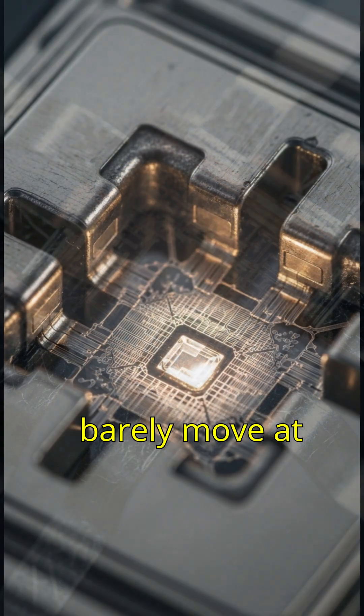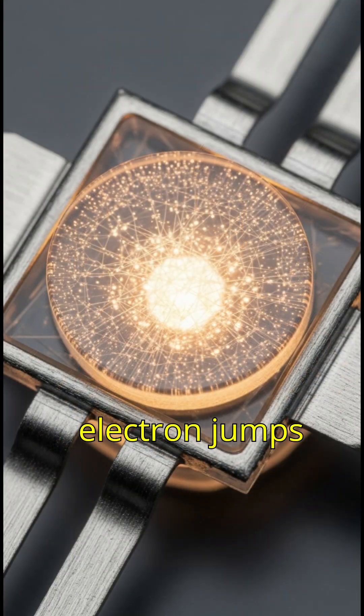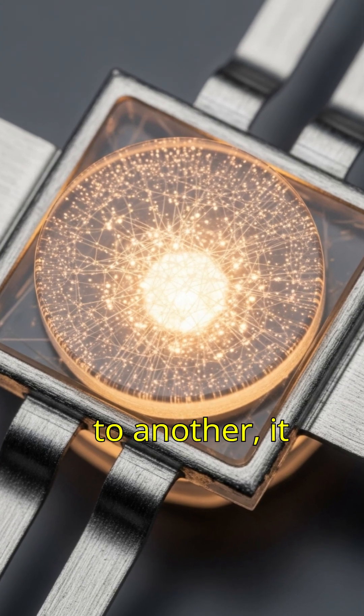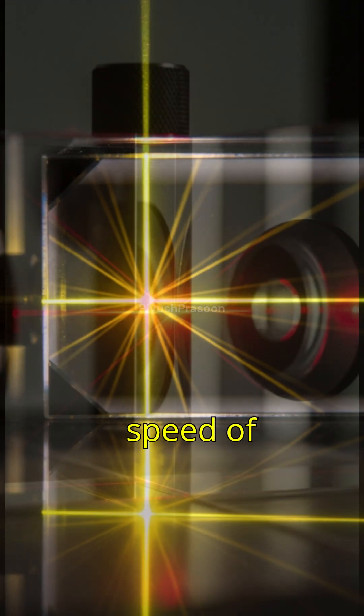Electrons inside atoms barely move at a fraction of that speed. When an electron jumps from one energy level to another, it emits a photon. And that photon instantly travels at the speed of light.